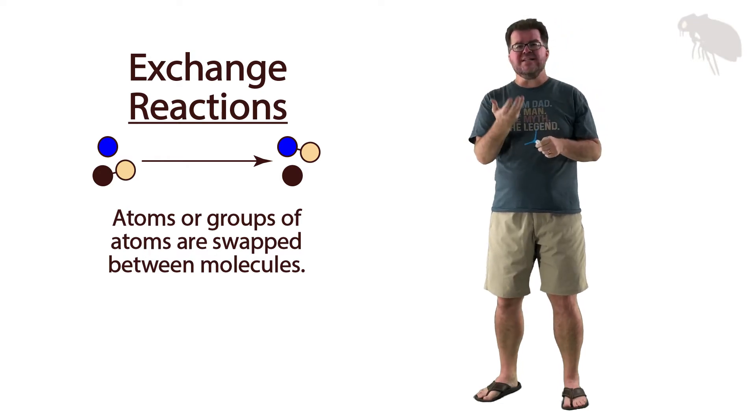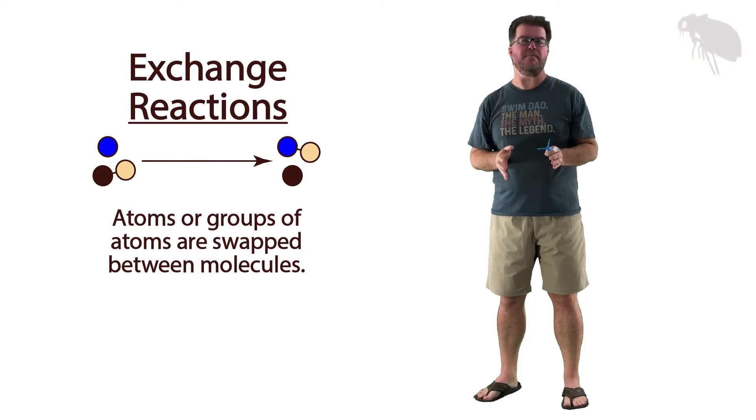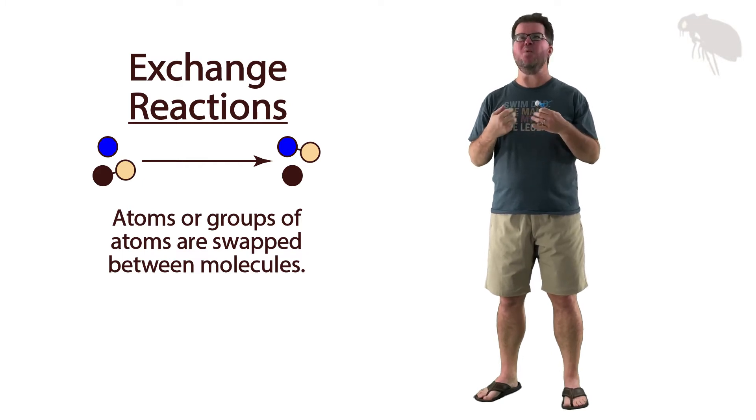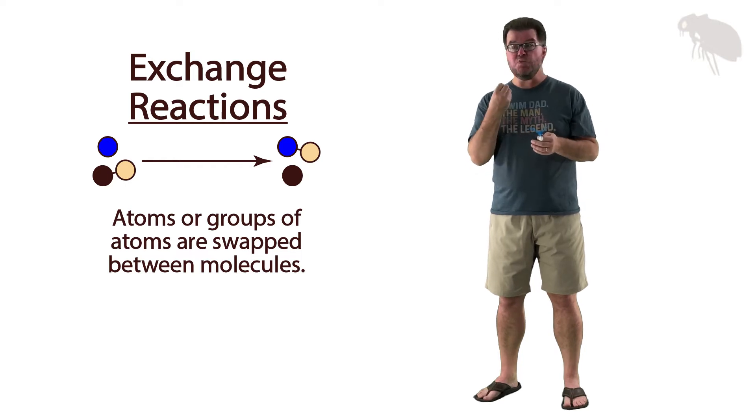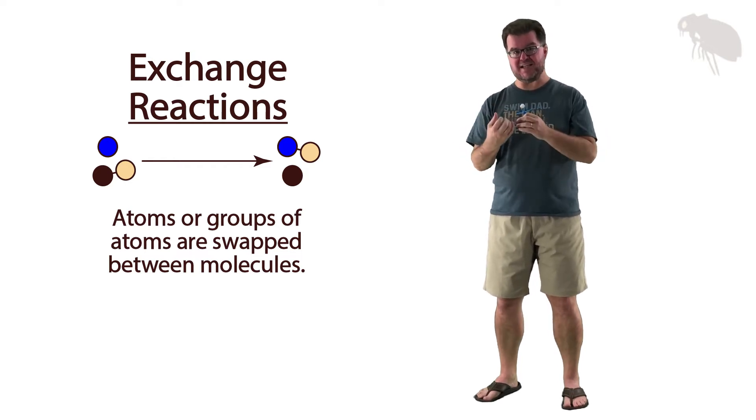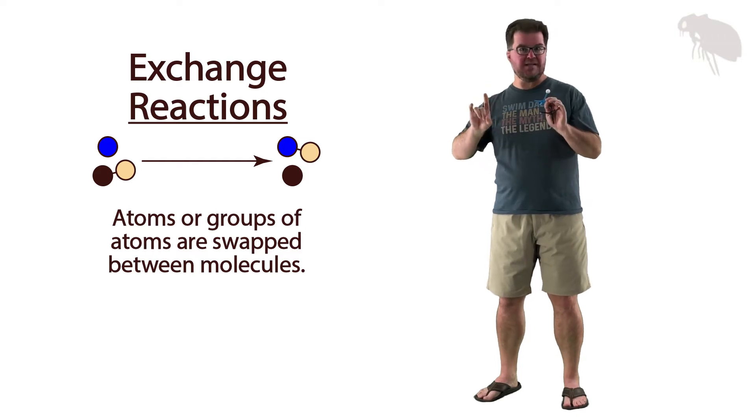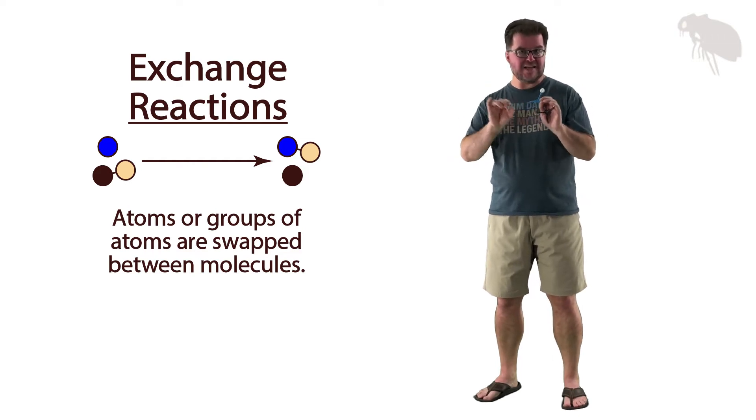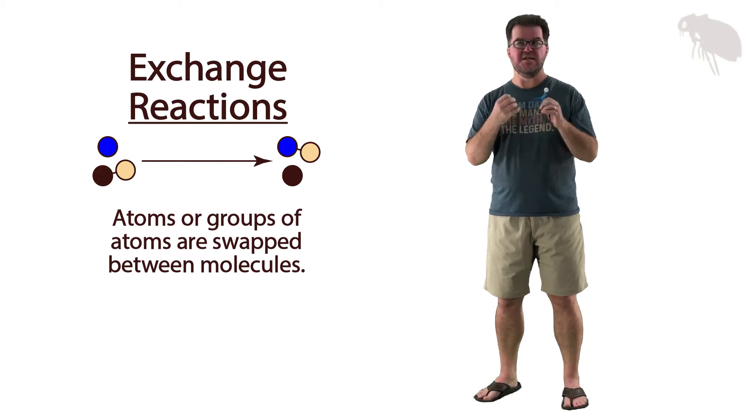The places in biology where we see exchange reactions happen are not always obvious, but one of the most important places we see it is with protein synthesis. Because the way in which proteins are actually synthesized is the amino acids have to be brought in in exactly the correct order to build the protein, because proteins are amino acid polymers.